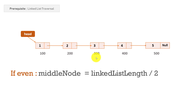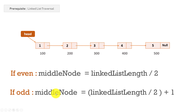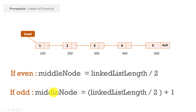There is a catch: if the number of nodes is even, the middle node equals linked list length divided by two. But if the number of nodes is odd, the middle node equals linked list length divided by two, plus one. For example, with five nodes (odd), five divided by two equals two, but that's not the middle node — the middle is position three. So we add one when the node count is odd.